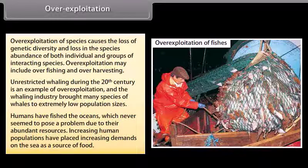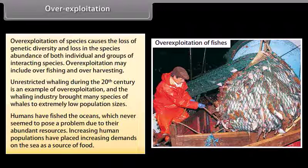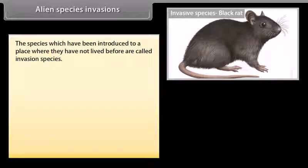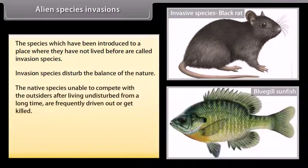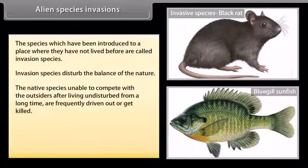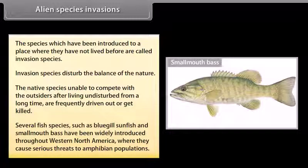Humans have fished the oceans, which never seemed to pose a problem due to their abundant resources. However, increasing human populations have placed increasing demands on the sea as a source of food. Alien species invasions: species which have been introduced to a place where they have not lived before are called invasive species. They disturb the balance of nature. Several fish species such as bluegill sunfish and smallmouth bass have been widely introduced throughout western North America, causing serious threats to amphibian populations.